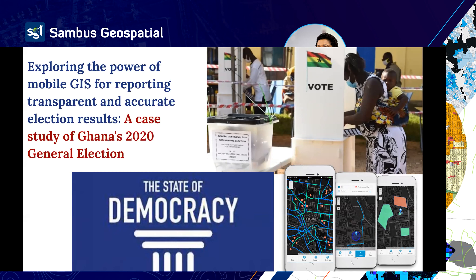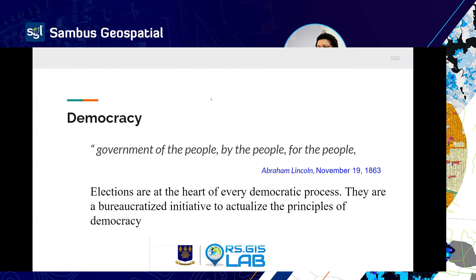We used GIS to monitor and aid the reporting of transparent and accurate election results, and I'll take us through how we were able to use mobile GIS for that. I'll start with the whole idea about why we've gotten to this point. Democracy, as defined by Abraham Lincoln, is the government of the people, by the people, and for the people. Elections are the heart of every democratic process — the way we try to actualize the principles of democracy.